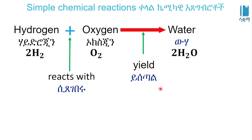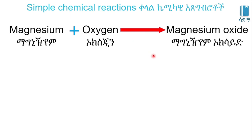Magnesium plus oxygen gives magnesium oxide. If we use magnesium and oxygen, we produce magnesium oxide. This is a chemical reaction.